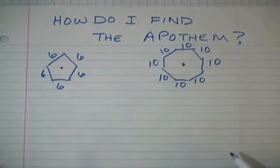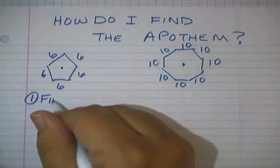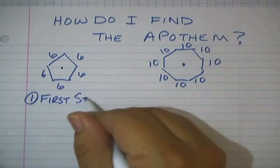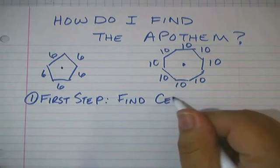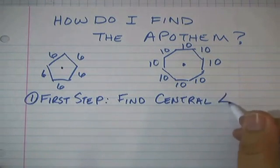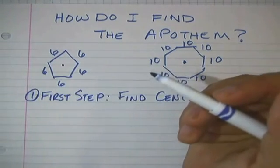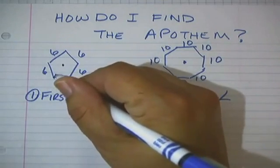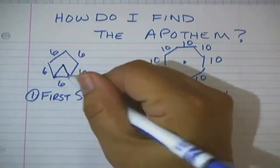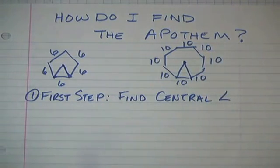So the first step I like to do is I like to find the central angle. First step, find central angle. Now what do I mean when I say find the central angle? Well you start in the center and go, what kind of angle could I make with this polygon? Logical thing to do is to connect the little points on the end. And believe it or not, that is the central angle.